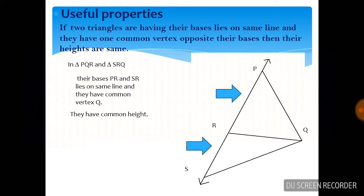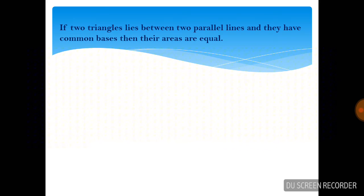If they have a common height, the ratio of their areas is equal to the ratio of their corresponding bases. This is the first property which we have to use.